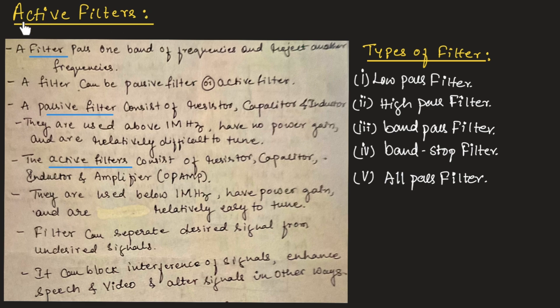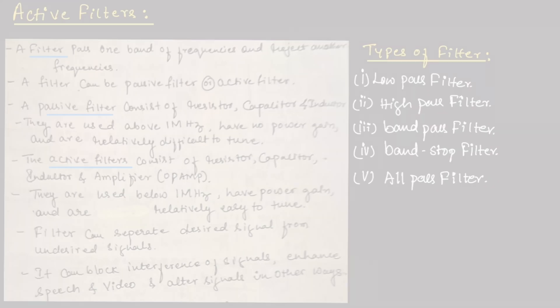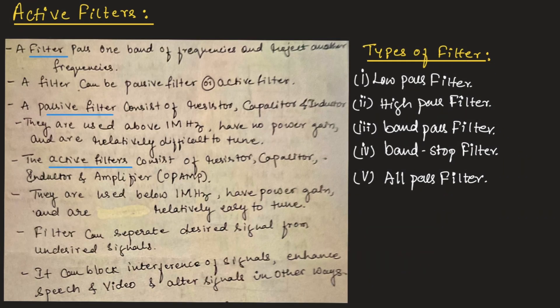Generally in our syllabus, we will be concentrating on active filters, which means we have passive components along with an amplifier which is usually an operational amplifier. There are four types of filters: low-pass filter, high-pass filter, band-pass filter, band-stop filter, and all-pass filter.